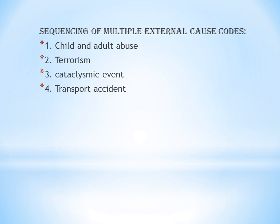Regarding sequencing of multiple external cause codes: if more than one external cause condition exists, the sequencing priority is as follows. First: child and adult abuse. Second: terrorism. Third: cataclysmic events — meaning natural calamities like cyclone, earthquake, or flood. Last: transport accidents. This covers the simplest form of Chapter 20, External Causes of Morbidity.